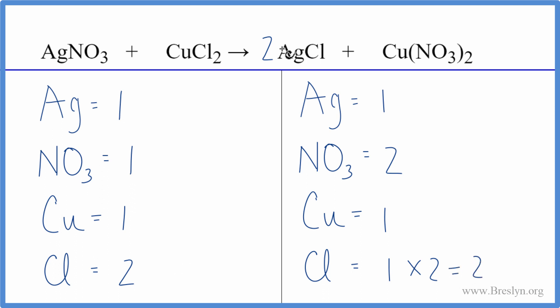But for the silver, one times two, that gives us two silver atoms. So they aren't balanced. Why don't we just balance the silver atoms, see how that goes. That might fix the nitrates.